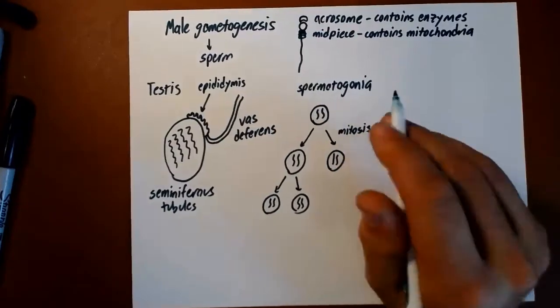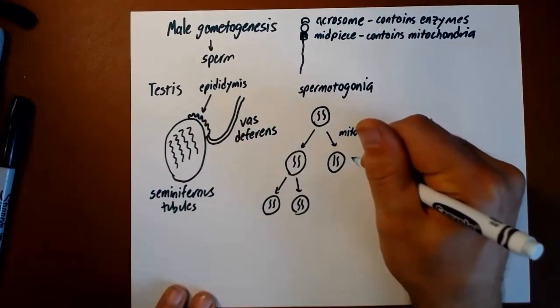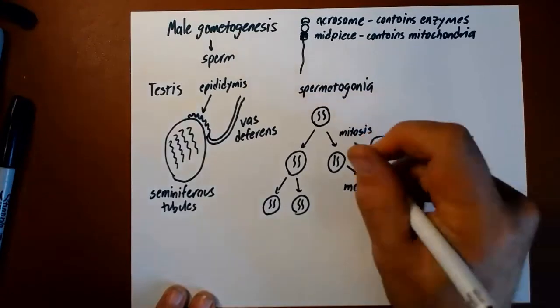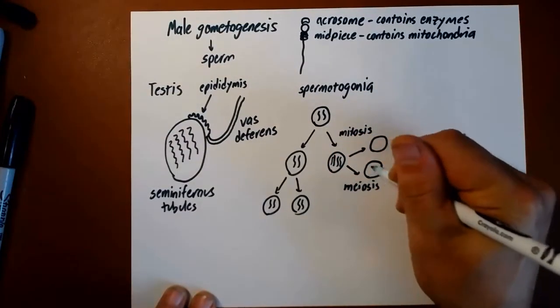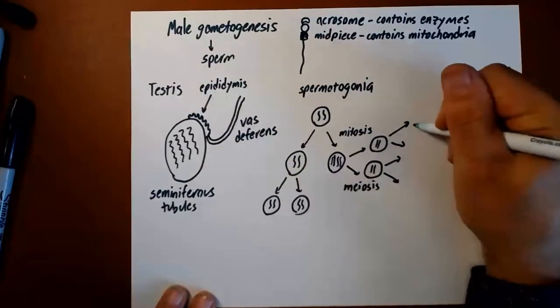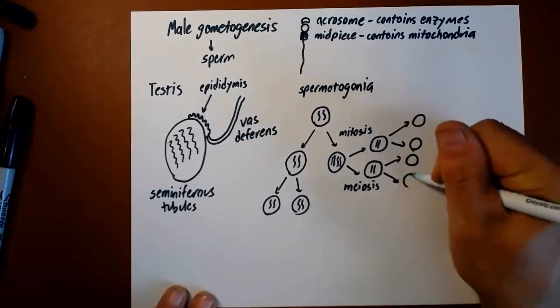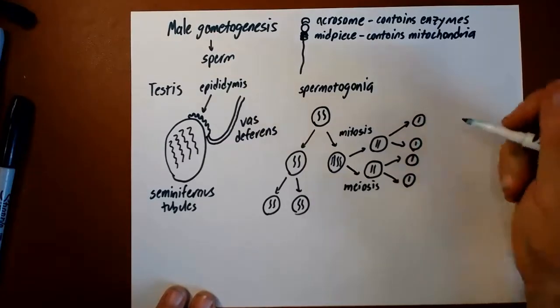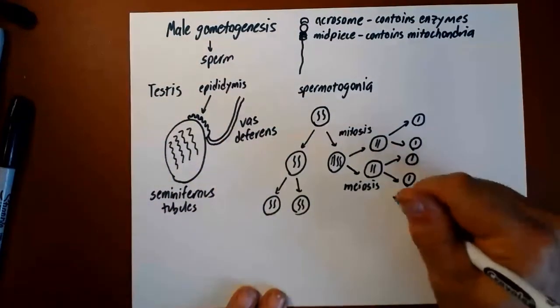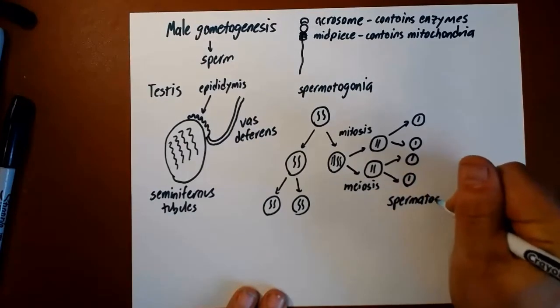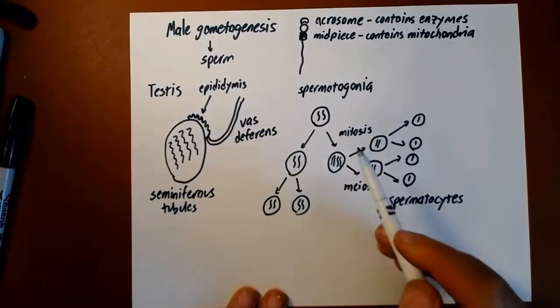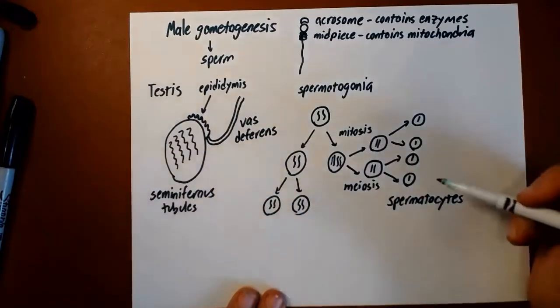These spermatogonia can also undergo meiosis. This one is going to undergo meiosis. It's going to duplicate its DNA and undergo these two meiotic cell divisions to produce four haploid cells. Although these are not the final sperm. These are known as spermatocytes. My spermatogonia can undergo mitosis to make more spermatogonia or they can undergo meiosis to produce four haploid spermatocytes.